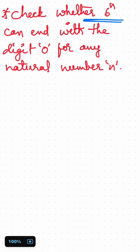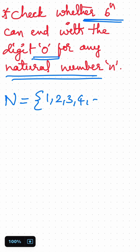Check whether 6 to the power of n can end with the digit 0 for any natural number n. First you take the natural number set. The natural number set starts with 1, 2, 3, 4, so on.